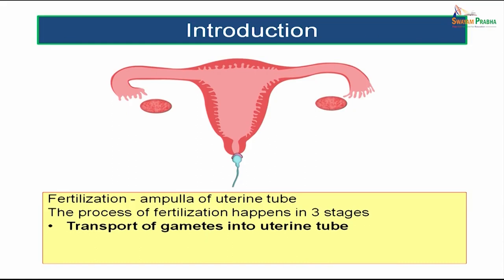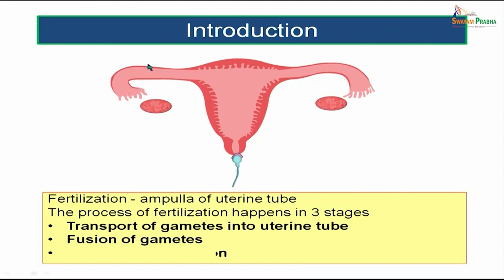The first stage is transport of gametes into the uterine tube. We have two gametes: the sperm from the father and the mature ovum from the mother. These two gametes must reach the ampulla of the uterine tube. There they will fuse, resulting in fertilization. These are the three main phases of fertilization.